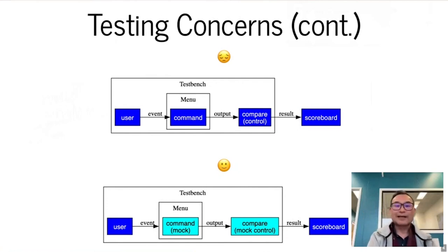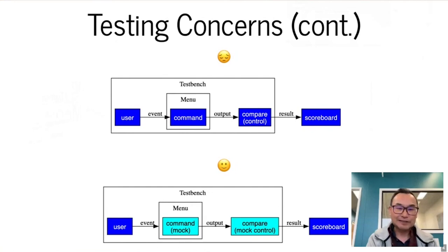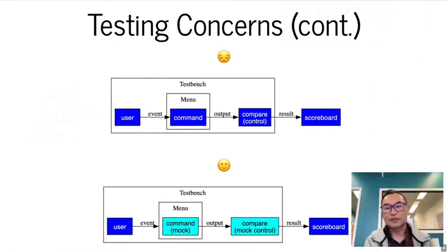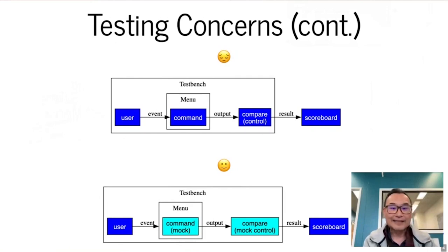Here I've got a block diagram. At the top level, you can see what you want to avoid when writing a UI test. If you have a test bench with a generator that creates user events, and you drive an interface that has embedded in it the actual functionality, you could send that event to the actual command, compare output to a control value, and tally results in a scoreboard. This is basically a pattern for a test regression.